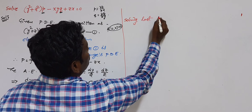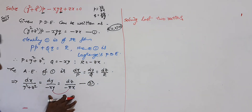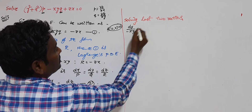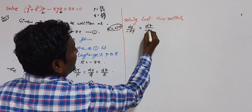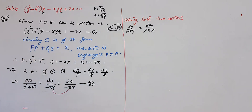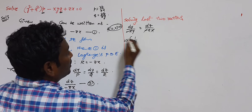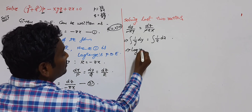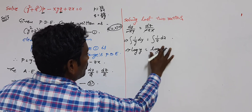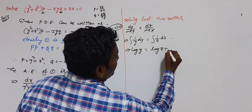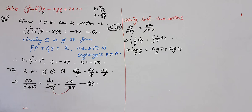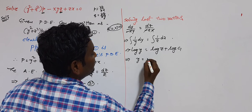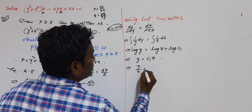Solving the last two ratios: dy/(−xy) = dz/(−zx). The −x terms cancel. Variables are already separated, so integrating both sides: ∫(1/y)dy = ∫(1/z)dz gives log y = log z + log c₁. Therefore y = c₁z, or y/z = c₁. We take this as u, so u = y/z.